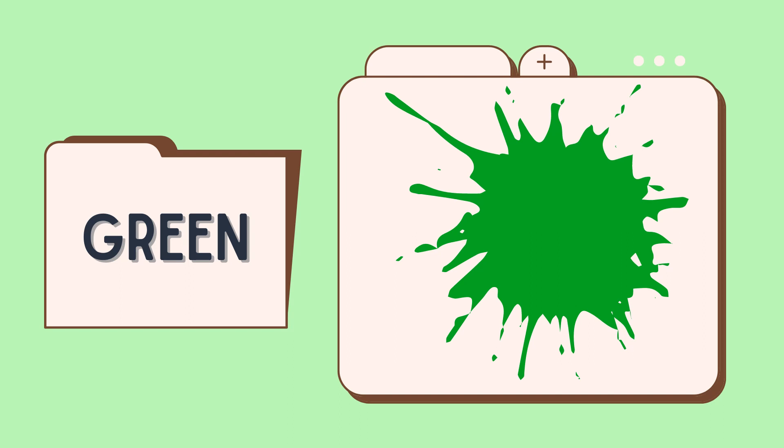Our third colour is green. Green. Can you say green? Wonderful. Now let's spell: G, R, E, E, N — green.